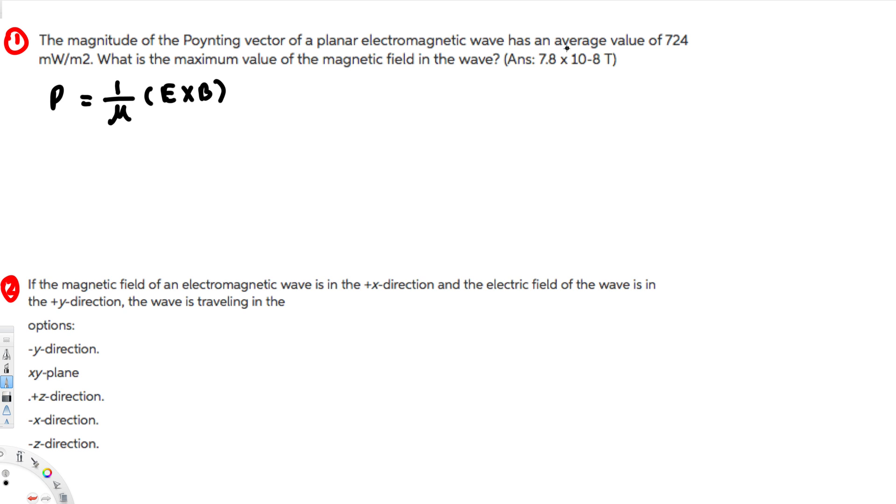But here they have mentioned that's average value of Poynting vector, right? So average value we have this equation: P average is equivalent to 0.5 E dot B over μ, right?